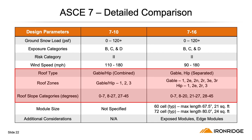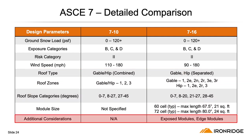When we get into roof type, 716 separates roof profiles into hip and gable, each with their own unique method for determining wind pressure. Roof slope categories have changed in that there are more of them. ASCE 716 also introduced the concept of exposed modules and provided some design guidance around them. IronRidge is adding the additional consideration of edge modules, and we'll get into the difference between the two shortly.